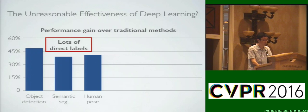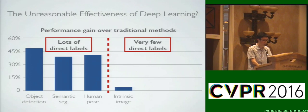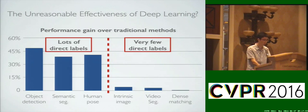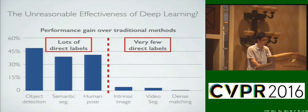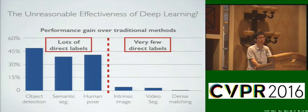But for tasks where direct supervision is limited, such as intrinsic image decomposition, video segmentation, and dense pixel matching, deep learning has not made much in-road. For these tasks, the labels are inherently scarce, and this is particularly problematic for deep networks that typically require tons of labeled data during training.